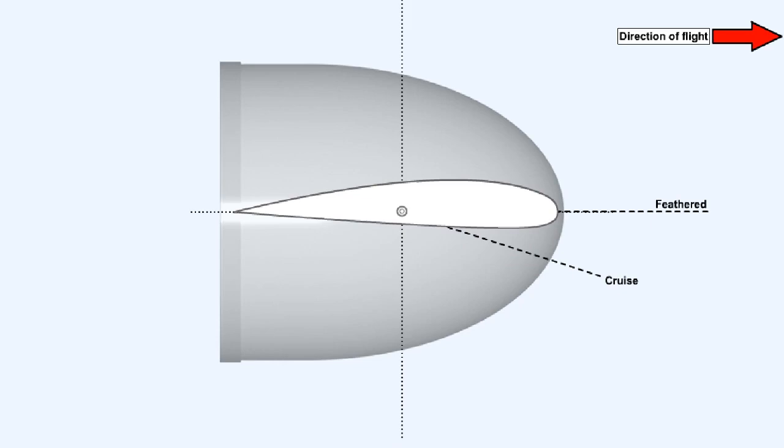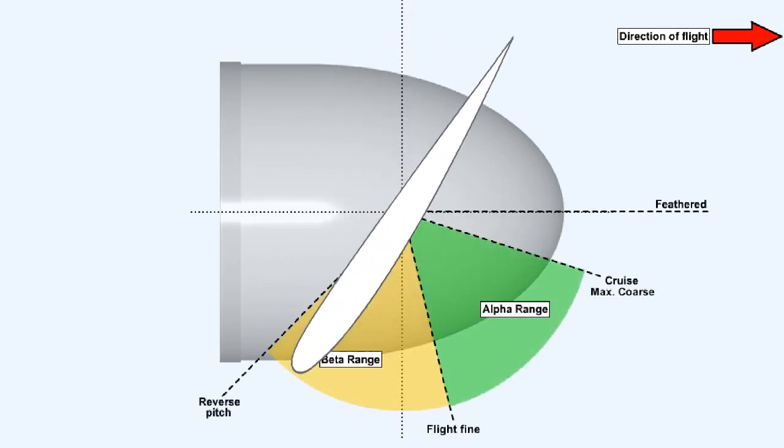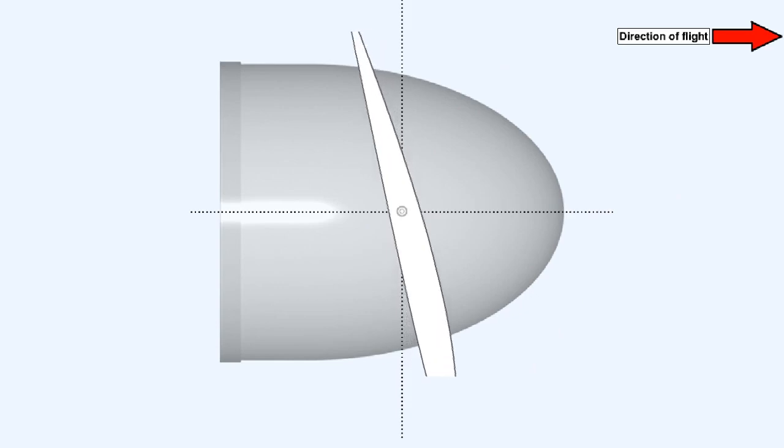The feather position is not included in either range and is used for emergency conditions only. In the event of engine failure, the propeller blades will be moved directly to this position to prevent windmilling. There are no pitch angles available between max coarse and feather. The method of control within the alpha and beta ranges and the means of achieving the propeller feather position will be discussed progressively throughout this lesson. Varying the pitch of a propeller throws up two basic problems, one of blade actuation and one of pitch control. We will initially examine the problem of blade actuation. The issue of pitch control will be covered later in this lesson.